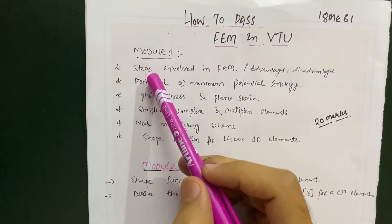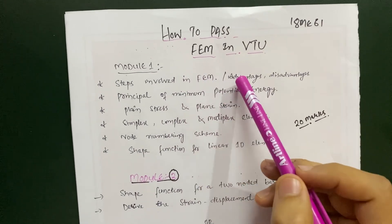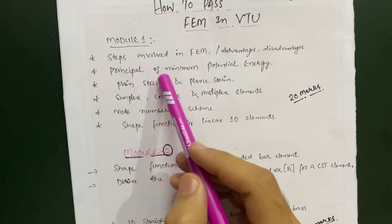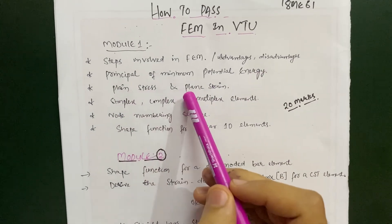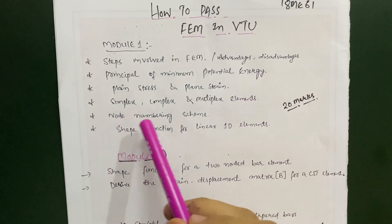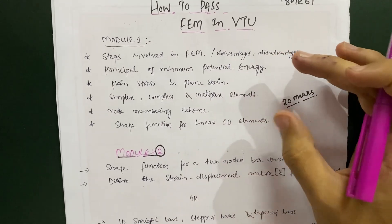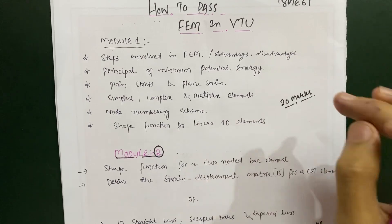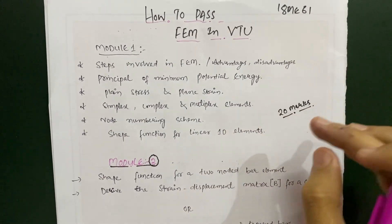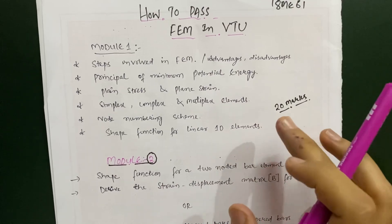In Module 1, focus on these particular topics: the steps involved in FEM — they may ask you the basic steps involved in the finite element method — along with its advantages, disadvantages, and applications. Also refer to the principle of minimum potential energy, plane stress and plane strain problems, simplex, complex, and multiplex elements, node numbering scheme, and shape functions for linear 1D elements. If you focus on only these theory questions in Module 1, you will easily get 20 marks. This is the only module where you can score 20 out of 20.